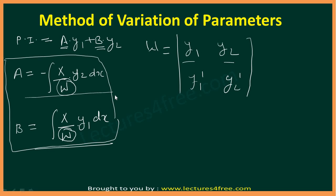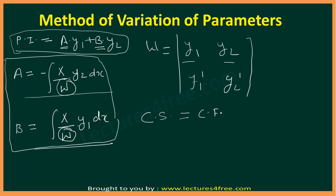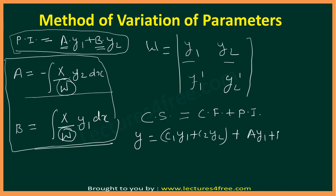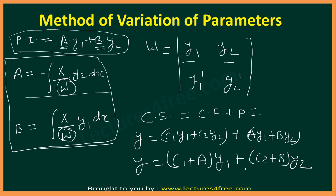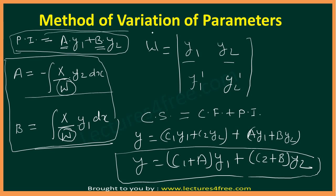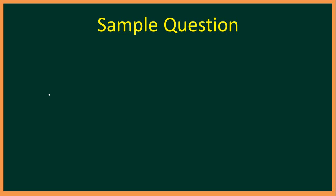Once we find A and B, we substitute them back to get the particular integral. The complete solution is then y = complementary function + particular integral, which we can write as y = c1·y1 + c2·y2 + A·y1 + B·y2, or simplified as (c1 + A)·y1 + (c2 + B)·y2. This is how we get the complete solution using the Method of Variation of Parameters. Now let's see a sample question.